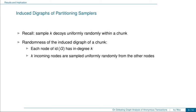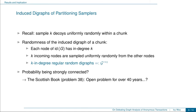Now consider the induced directed graph of a partitioning sampler. Recall that a partitioning sampler samples K decoys uniformly randomly within a chunk. We observe that in the induced directed graph of a chunk, each node has in-degree K, and the K incoming nodes are sampled uniformly randomly from the other nodes. In the random graph theory literature, graphs with this type of randomness are called K in-degree regular random directed graphs, denoted G_reg. We then ask: what is the probability that this type of random directed graph is strongly connected? Unfortunately, this problem seems quite hard and has been open in the math literature for over 40 years, and we were also unable to solve it.